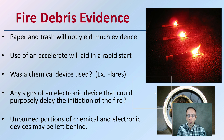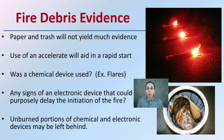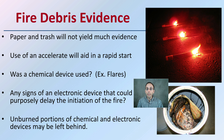Now, the fire debris evidence you might be looking to collect: paper and trash itself typically does not yield much evidence. We want to be looking for whether an accelerant was used to aid in a rapid start, or whether a chemical device was used. For example, we see the picture above — flares — were they the potential start of the fire? Are there any signs that an electronic device was used to purposely delay the initiation of a fire, indicating someone may have set the stage, left, and had the fire occur when they were safely out of the area? Unburned portions of chemical and electronic devices may also be left behind, providing more evidence about what happened.